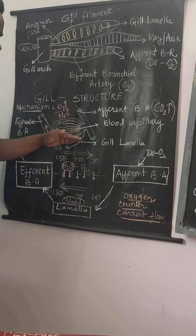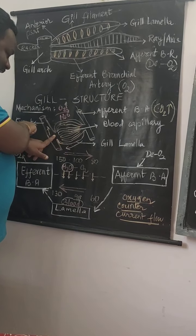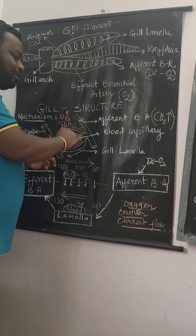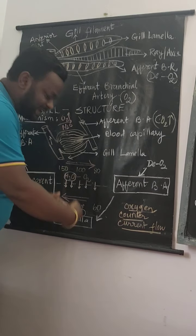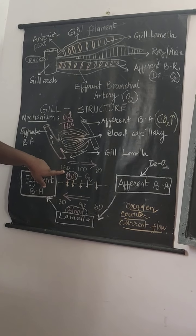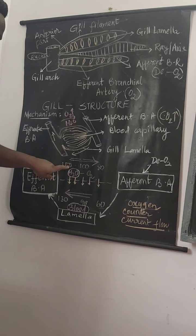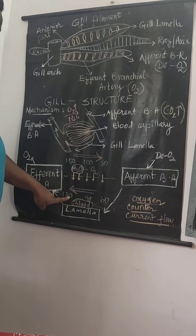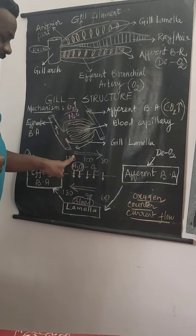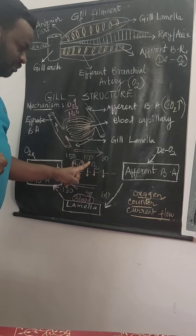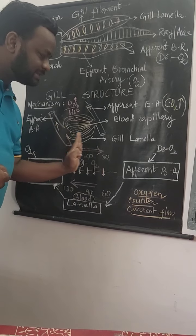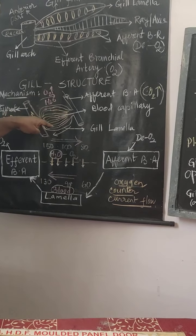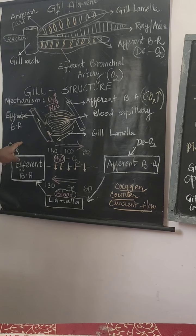As the water moves slowly, oxygen molecules are absorbed. From the afferent to the efferent branchial zone, the amount of oxygen present in the water slowly decreases because it is being absorbed into the lamella. For example, the partial pressure of oxygen in the water starts at 150; as it moves along, 130 is absorbed into the blood, reducing it to 100, then 90 is absorbed, reducing it to 80, then 60 is absorbed. So oxygen-rich blood now starts moving into the efferent branchial artery.